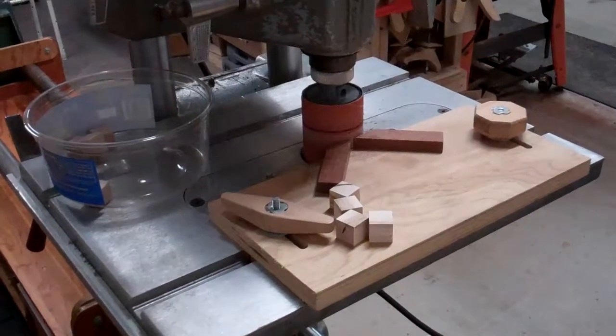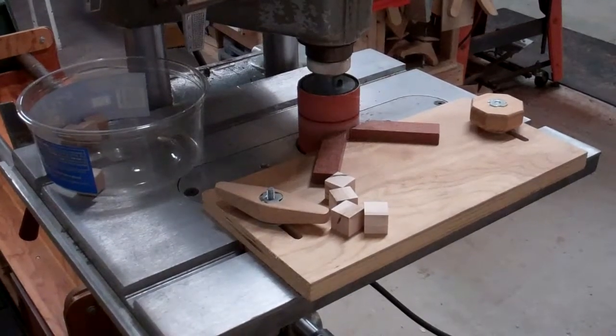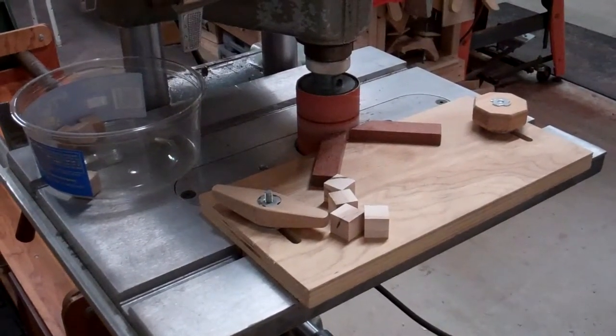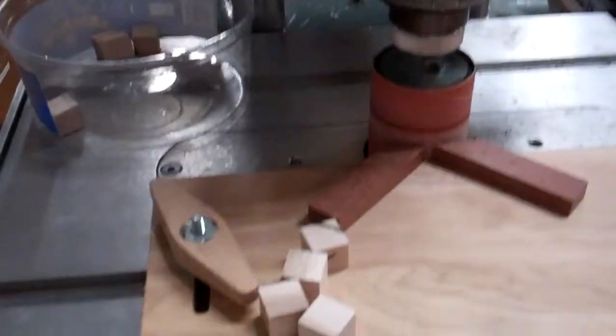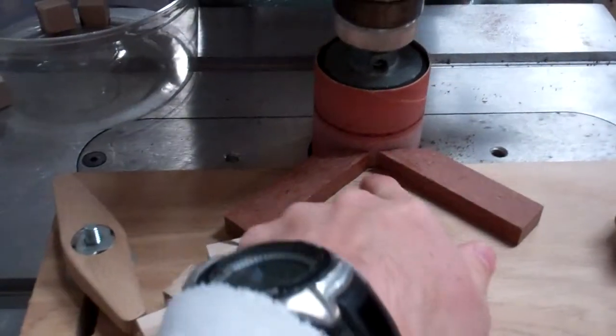So I thought I'd show a short video on how I bevel the edges of cubies using this simple jig on a drum sander. The jig will slide back and forth in and out, and then the cubes go in this little V cradle.